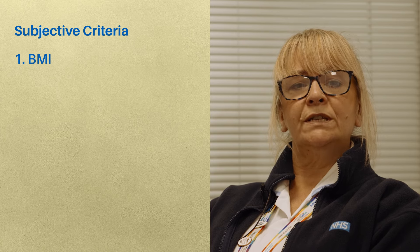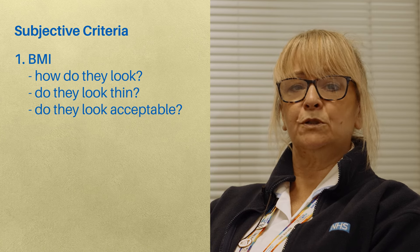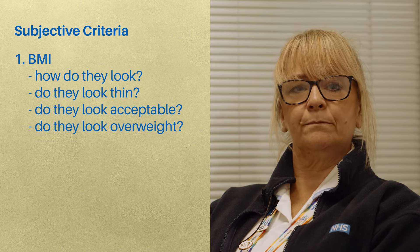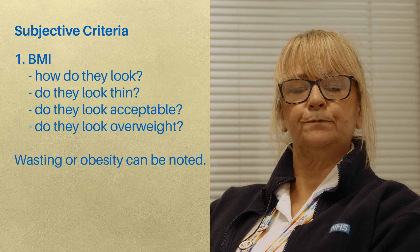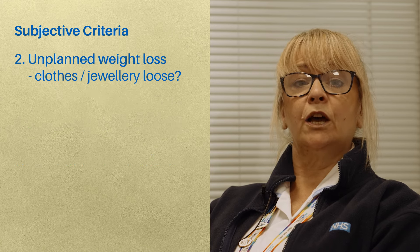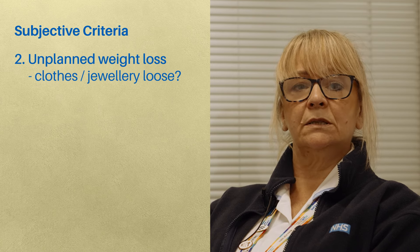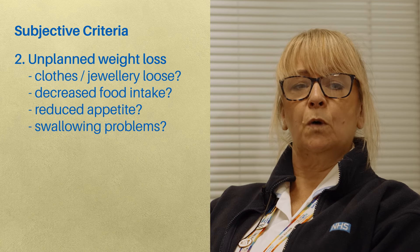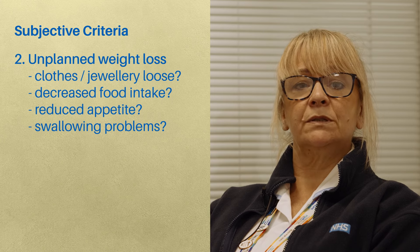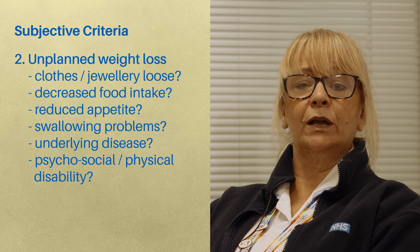BMI: using your professional judgment and clinical impression of your patient when looking at them — how do they look? Do they look thin? Do they look of an acceptable weight? Or do they look overweight? Obvious wasting and obesity can also be noted. Unplanned weight loss: have their clothes or jewellery become loose-fitting recently, which would indicate weight loss? Has there been a history of decreased food intake, reduced appetite or swallowing problems over the last three to six months? And any underlying disease or psychosocial physical disabilities likely to cause weight loss?